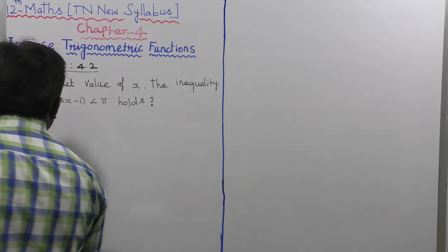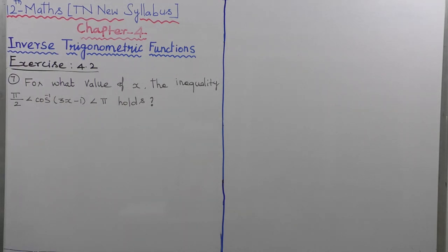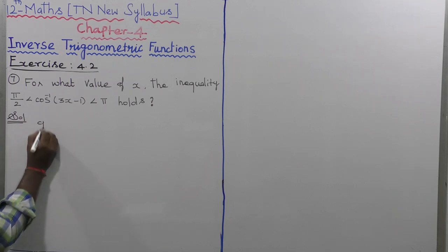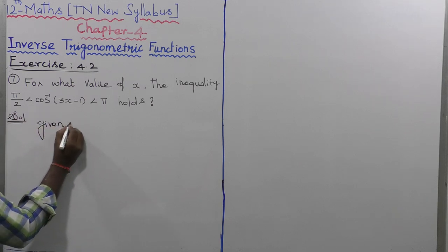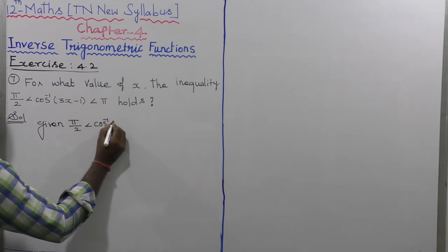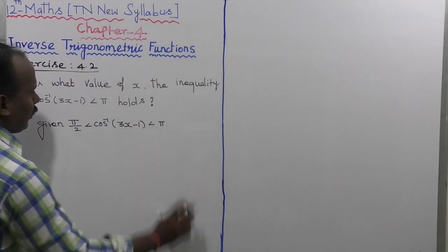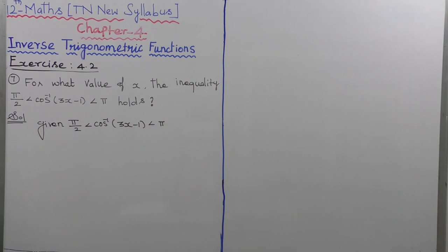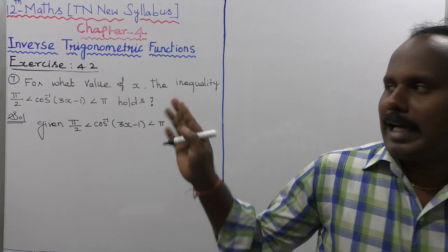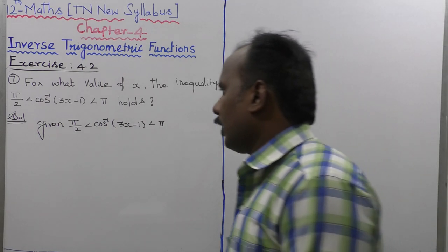What value of x satisfies this inequality? So first of all, let us take the given inequality. This sum is solved by two methods: the first one is solved directly, and the second one is the graphical method.